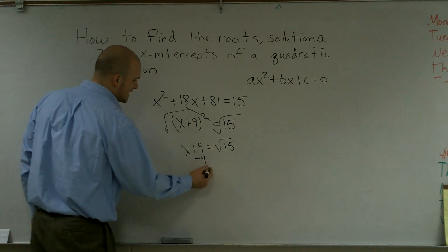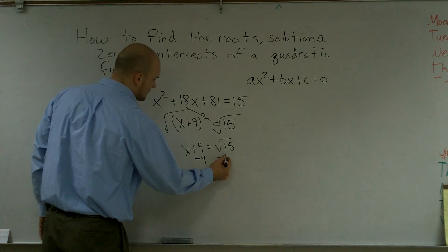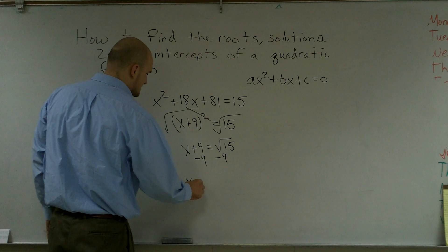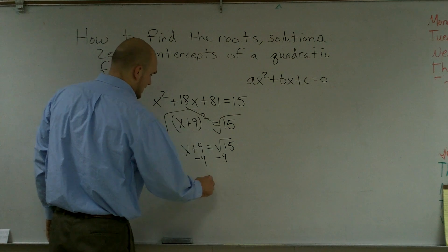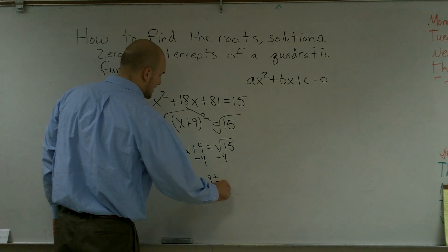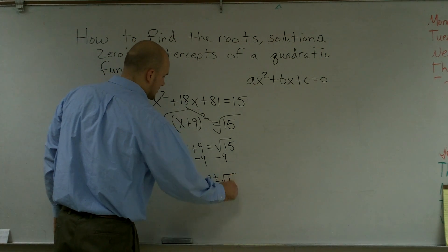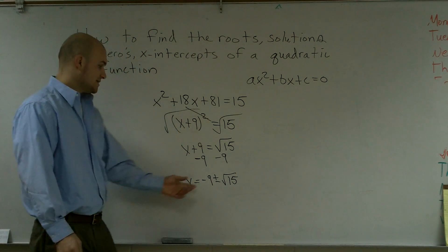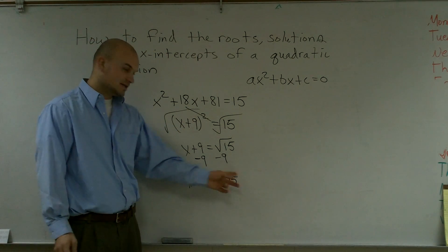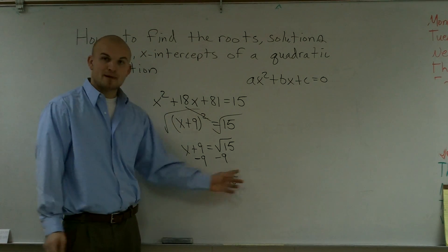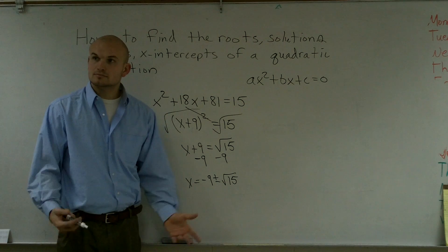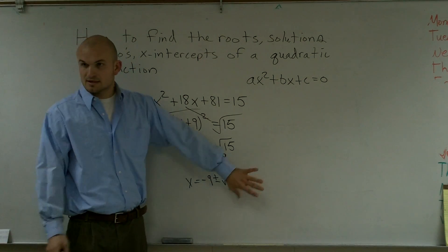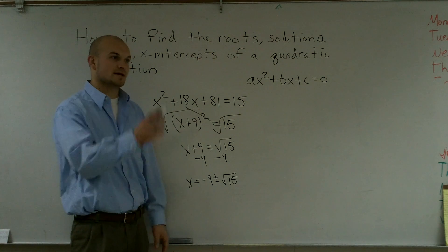I subtract 9 and get x by itself. Therefore, x equals negative 9 plus or minus the square root of 15. So I'm going to have two answers: negative 9 plus square root of 15, and negative 9 minus square root of 15. I do not want you to approximate what the square root of 15 is — leave it under the radical.